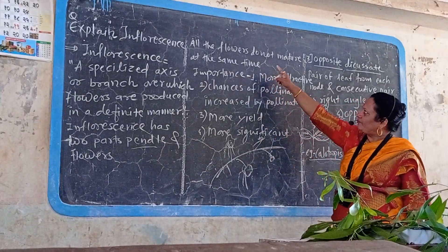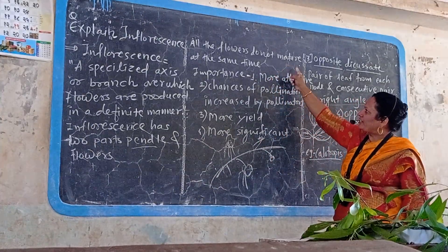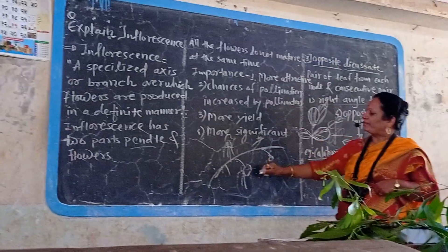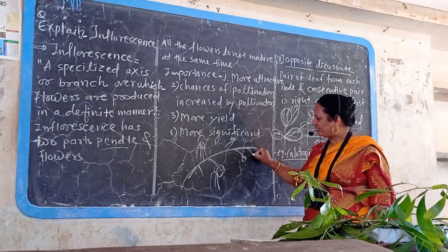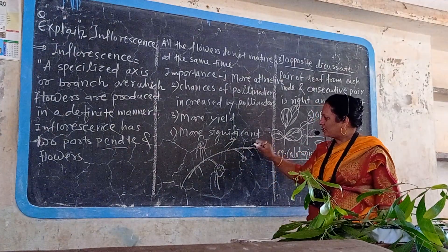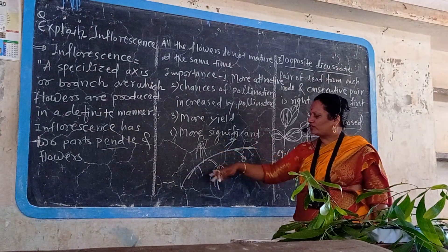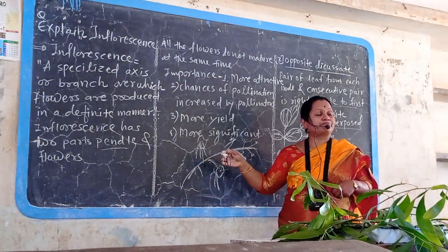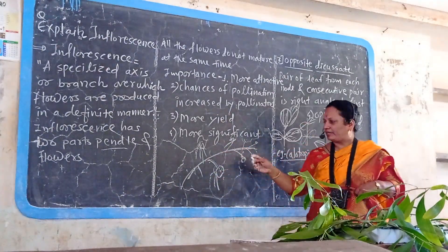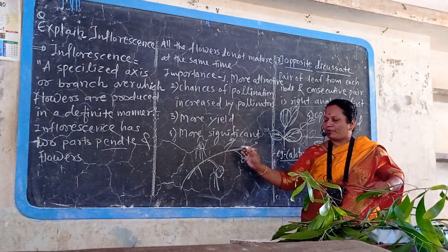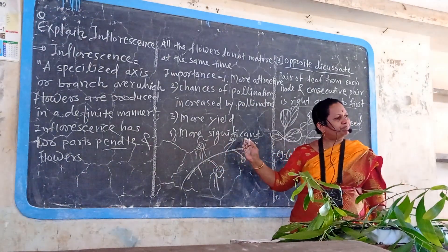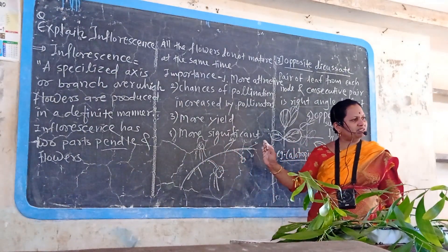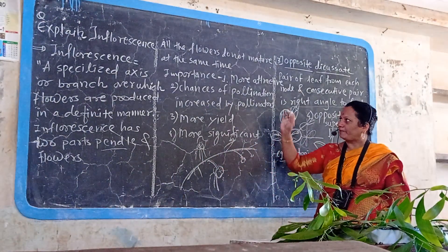All the flowers do not mature at the same time. Older flowers are present at the base, while younger flowers are present towards the top. These flowers are not all matured at the same time — some flowers mature first and some flowers mature after some time.